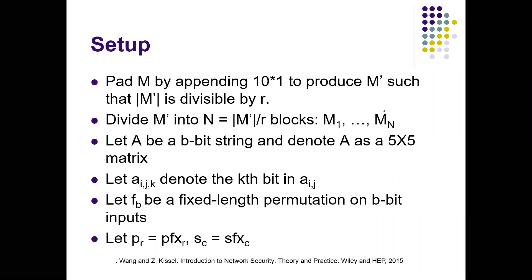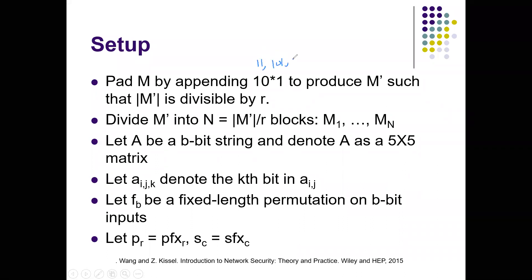Now let's look at setup. We need to pad M. We add the pattern 1, 0* , 1 — this is a regular expression, so for instance this could be 1, 1, 0, 1, 1, 0, 0, 1, and so on. We pad this pattern at the end of M, and what we want is to make sure that the length of the new padded string M-prime is divisible by R. Then we can write M-prime as a sequence of blocks where each block has length R.